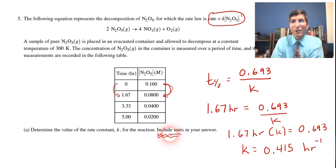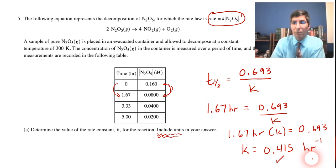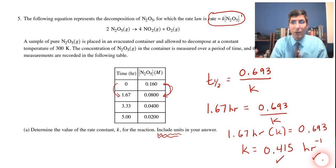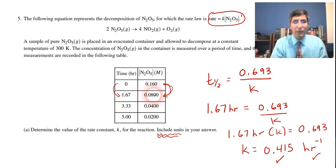On the rate constant, you have to give the correct unit to get full credit. My guess is that they'll give one point for the right number — 0.415 — and one point for the correct unit, which is reciprocal hour. Just so you know, this is not the only way to work the problem. You could also use the first order integrated rate law, which is given in the equation packet. Just plug in any two of these data points and you should get the exact same answer.